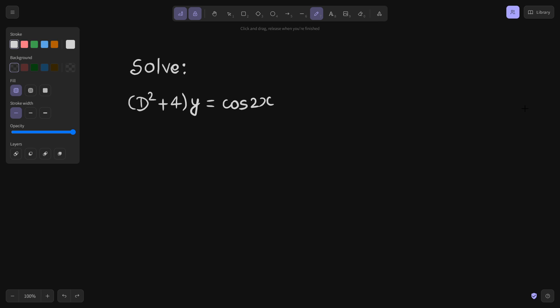Today we will be solving one more problem from linear differential equation with constant coefficient. We have this in front of us: D² + 4 operating on y equals cos 2x. Looks like an easy problem. Let us see how it is.